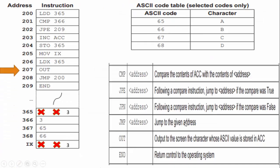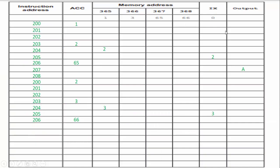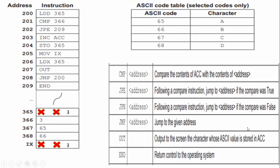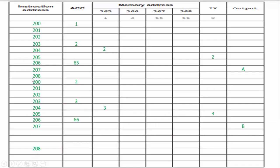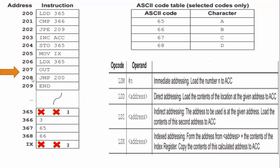Then line 207 says output to the screen the character — what was our accumulator value? It was 66. I check my ASCII code table: ASCII code 66 is equivalent to B. I document that on my trace table. Line 207 tells us to output B. Line 208 says we're going to jump to 200 because this address runs. We document it — 208 runs and we jumped back to 200.